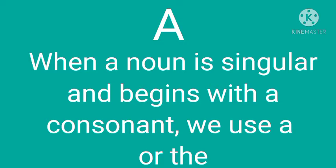अब consonant क्या होता है? We have 26 letters in our English alphabet, A to Z. उसमें A, E, I, O, U — ये five हमारे vowels हैं। बाकी के जो हैं वो consonants हैं। अगर कोई भी noun singular है और वो consonant से start होता है तो हम उससे पहले 'a' use करते हैं।